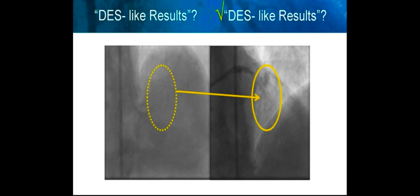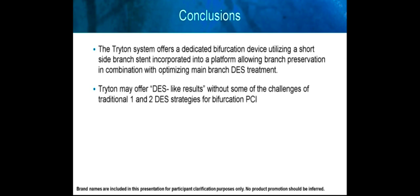In conclusion, the Triton system offers a dedicated bifurcation device utilizing a short side branch stent incorporated into a platform which allows branch preservation in combination with optimizing main vessel drug-eluting stent treatment. Triton may offer drug-eluting stent-like results without some of the challenges of the traditional one and two drug-eluting stent strategies for bifurcation PCI. Thank you very much for your attention — we'll be happy to answer any questions.